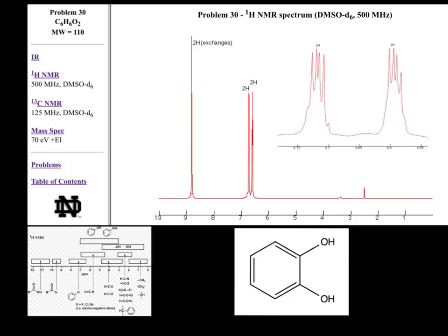Next we'll move on to proton NMR, which gives us a lot of information about hydrogen groups on our molecule. To the right is the lowest number — that is upfield — and all the way to the left is downfield. On this spectra we see three signals, indicating three different hydrogen groups experiencing different environments. Each signal also tells us how many hydrogens are in each group, and we see that each peak shows two hydrogens. Adding those up gives a total of six hydrogens, which corresponds to our molecular formula.